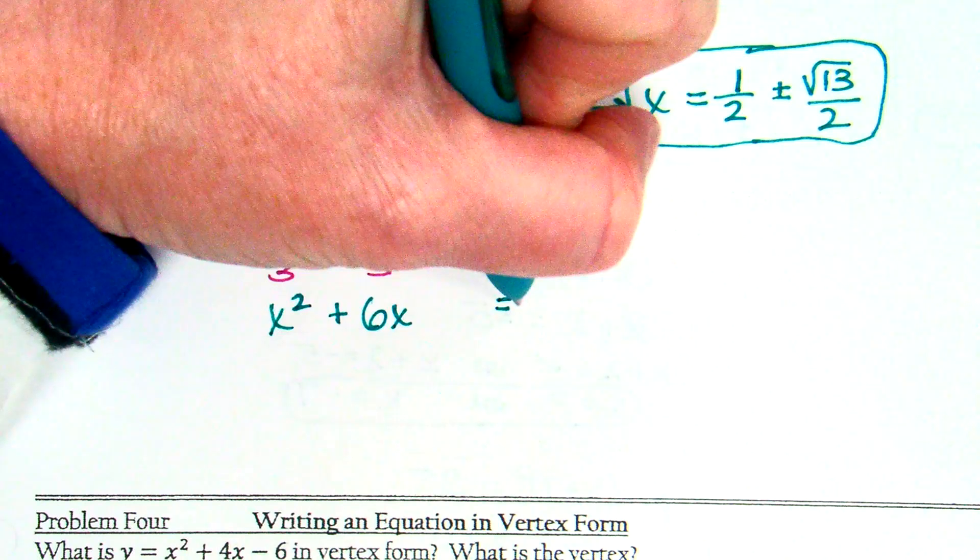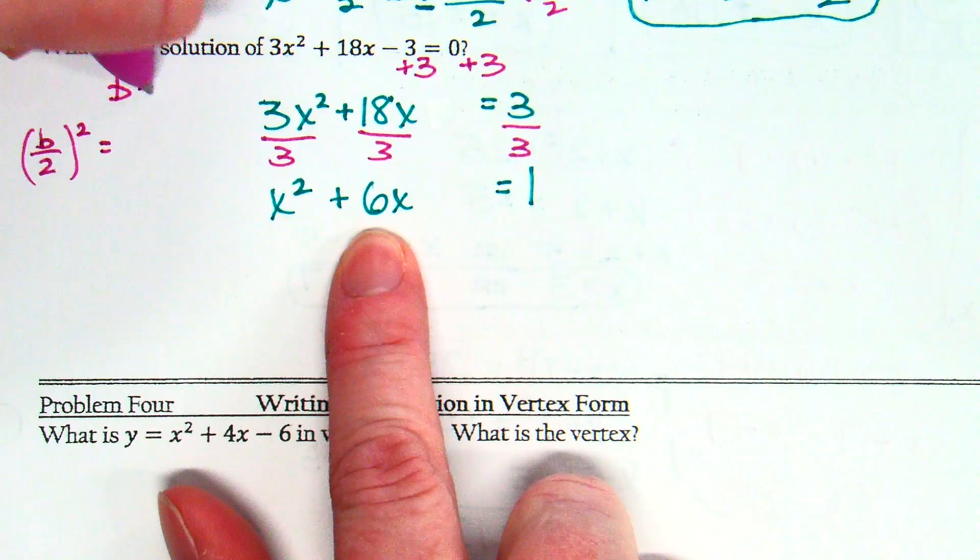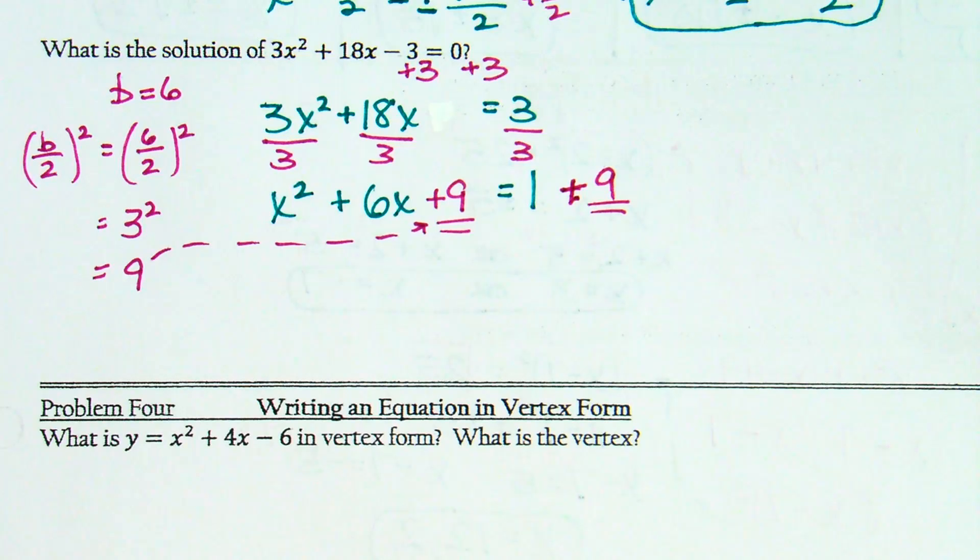Okay. So that's your step 1. Step 2. B over 2, quantity squared. What is b this time? My current b is 6. So 6 divided by 2 squared. 6 divided by 2 is 3. 3 squared is 9. What do I do with the 9? Add it to both sides. We're going to add 9 to the left and add 9 to the right. Okay. That was step 2.